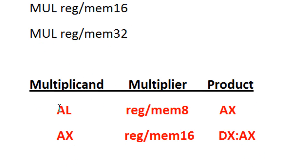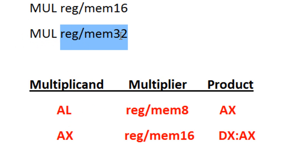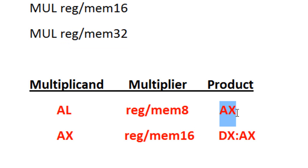The way it works is whatever is in AL will get multiplied automatically, so you have to move the values you want to multiply into AL. It'll multiply with whatever operand you put next to the multiplication instruction. So if it's an 8-bit value, you can put BL or an 8-bit memory operand there. It'll multiply the two together and the results get stored in AX.